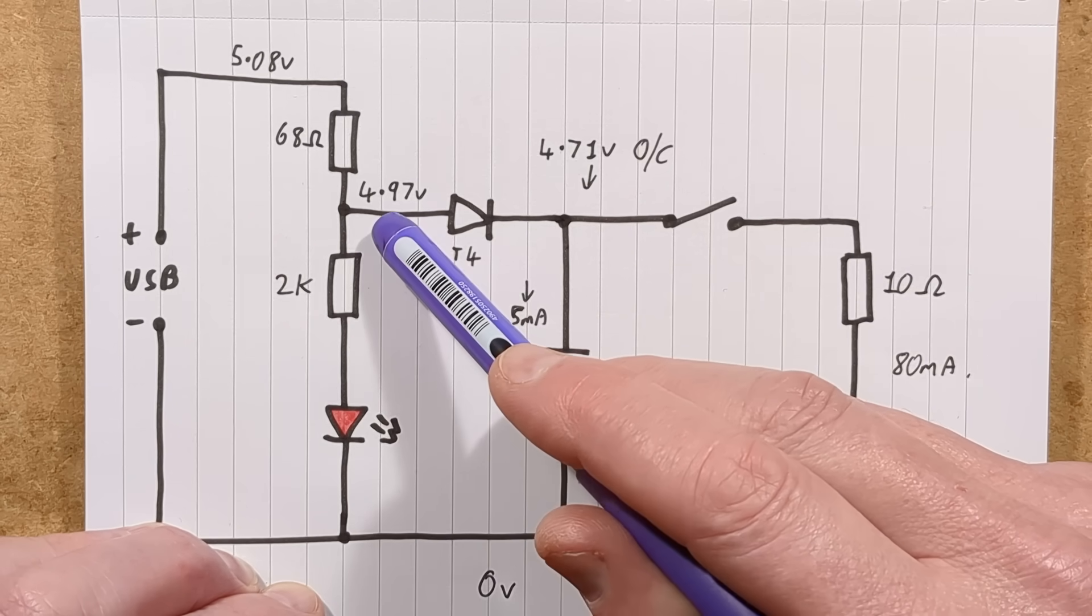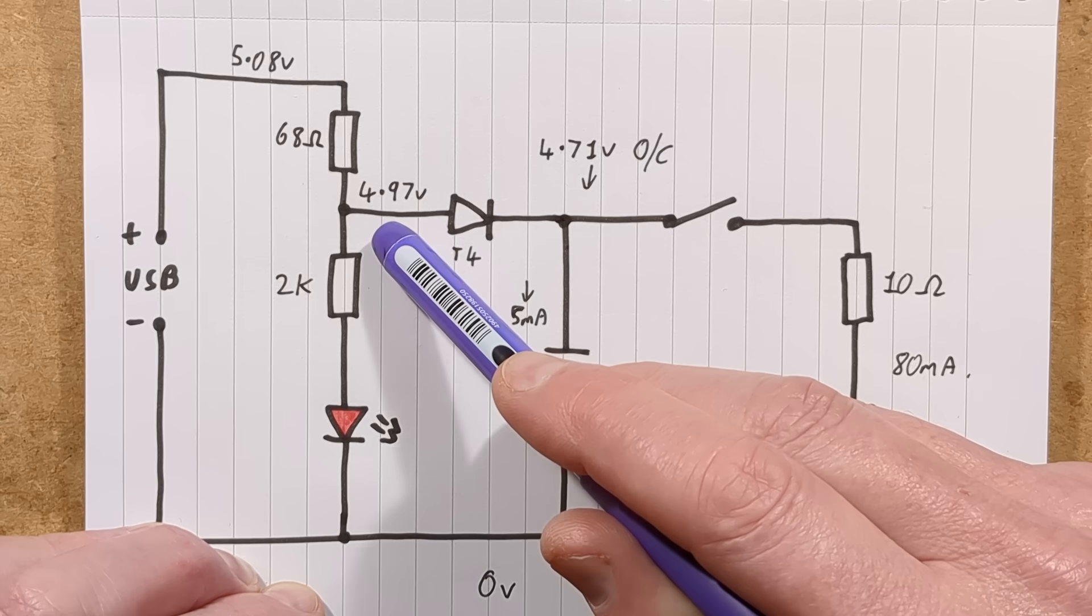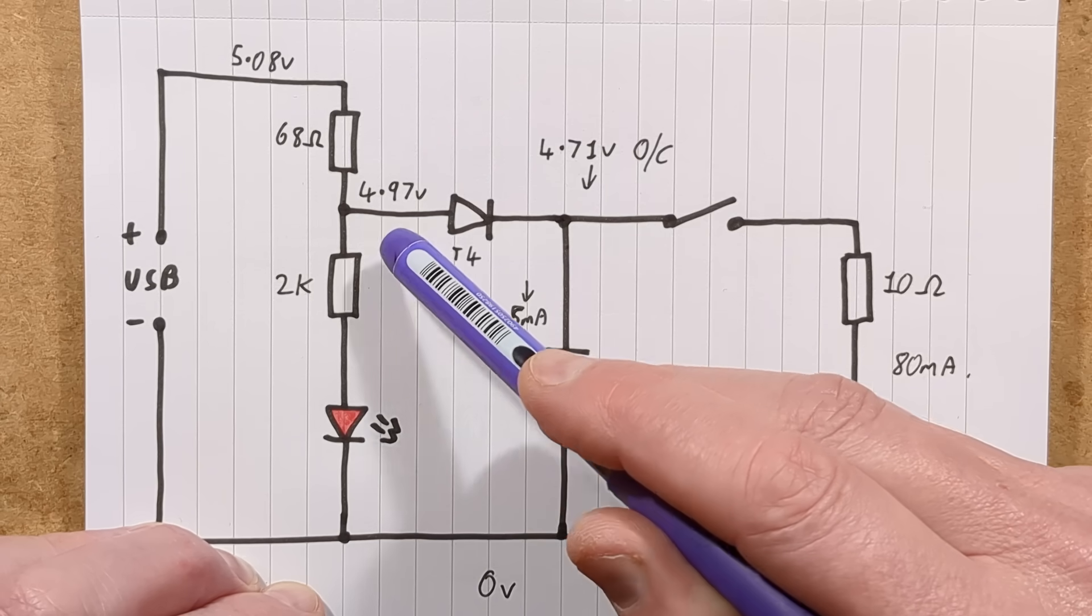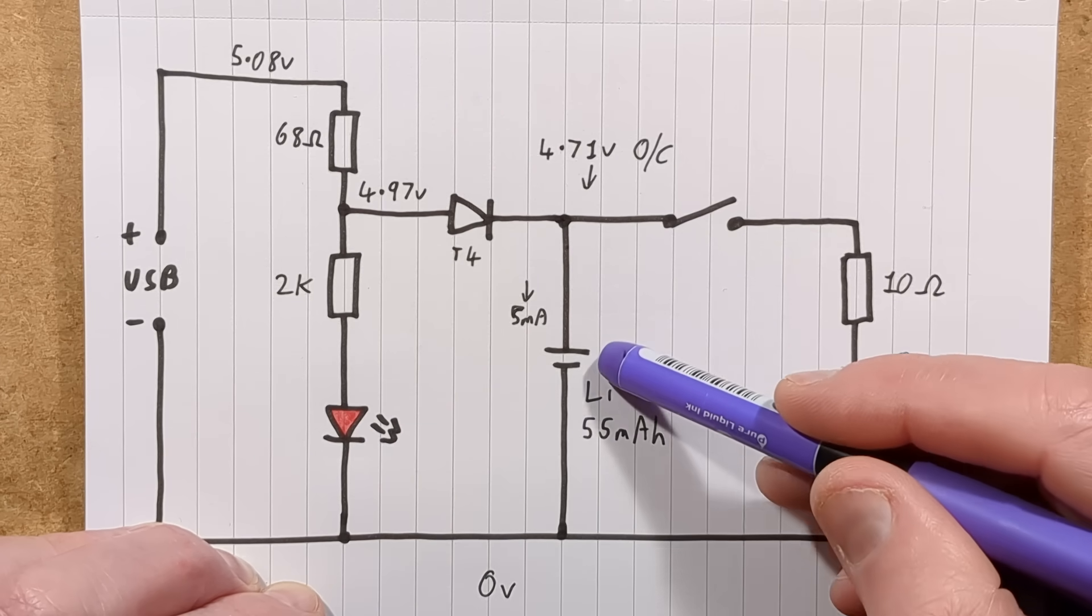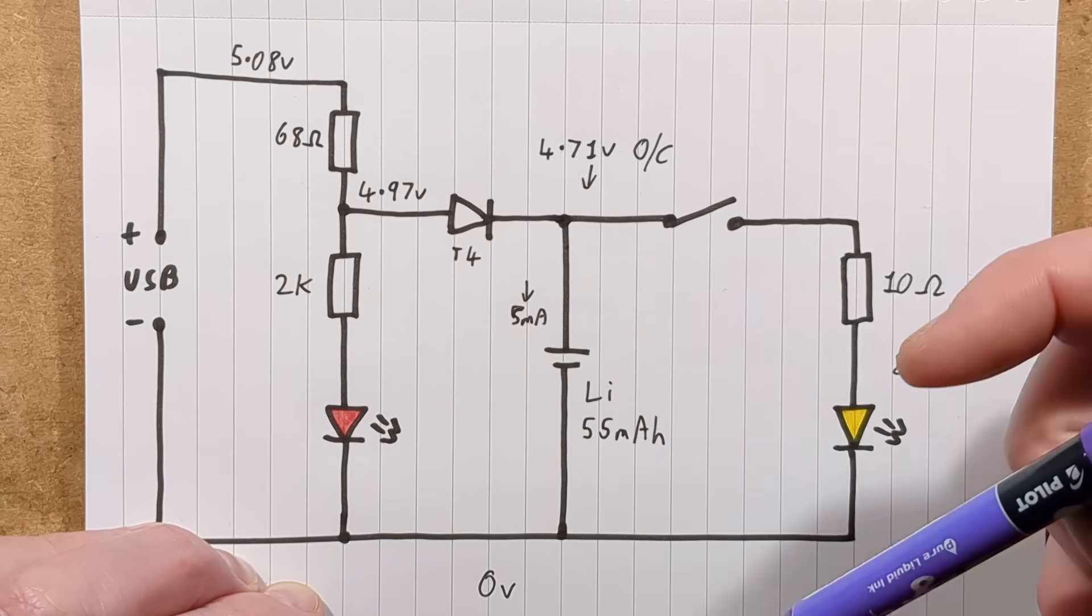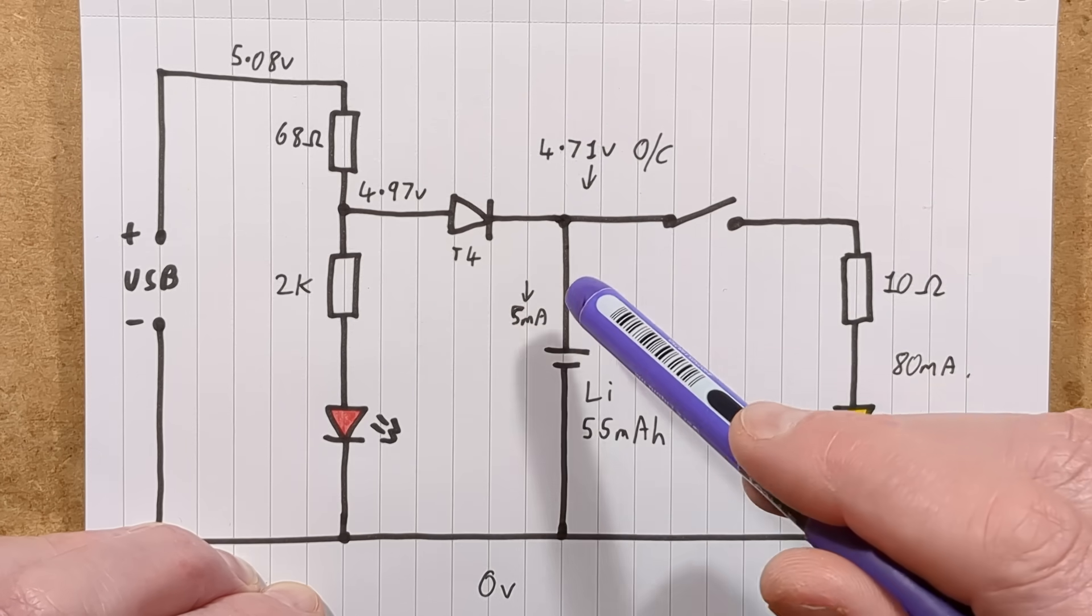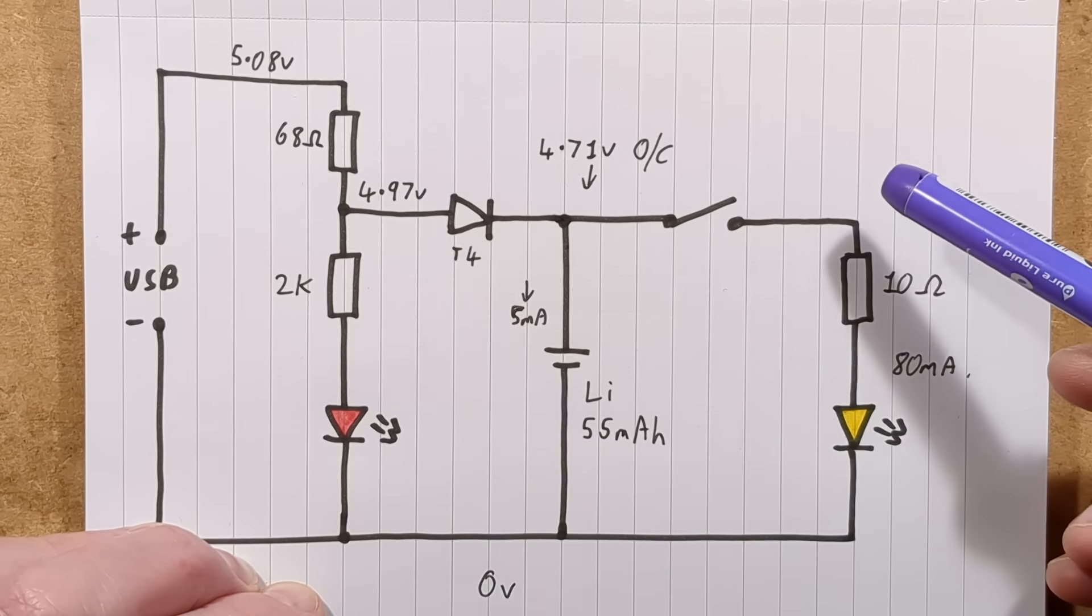They could have lowered this down to, say, 4.2 volts, and then it would have not quite charged lithium cell up to full capacity, which would have prolonged its life, and that would have given a bit more leeway. But they didn't.